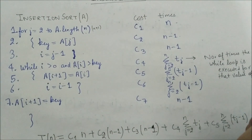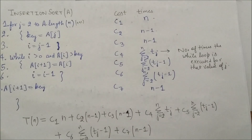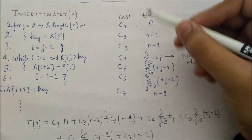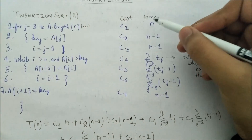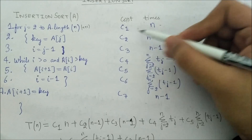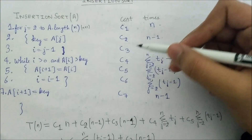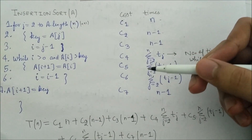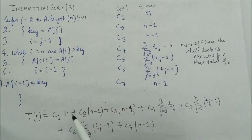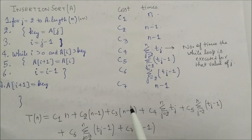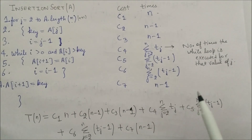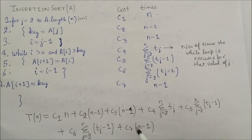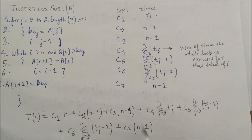Line 7 is inside the for loop but outside the while loop, so it executes n−1 times. The total time is: T(n) = c1·n + c2·(n−1) + c3·(n−1) + c4·Σtj + c5·Σ(tj−1) + c6·Σ(tj−1) + c7·(n−1).